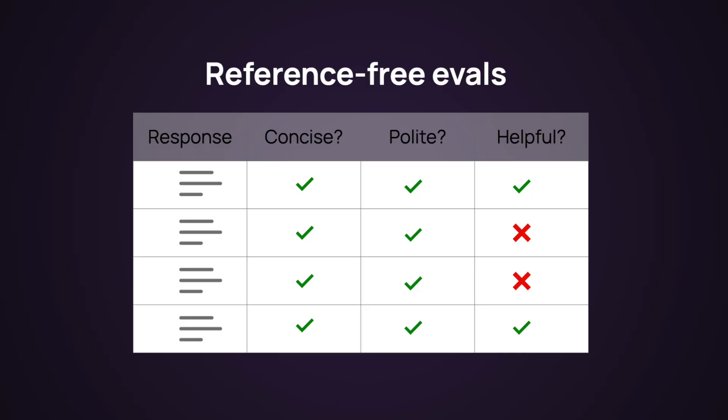The second way to run evaluations is open-ended or reference-free evaluations — that's where you don't have a correct answer in advance. For example, this applies to monitoring in production or to very complex open-ended or conversational scenarios where it's difficult to come up with an ideal response. In this case, you might be measuring specific qualities of the outputs you get — for example, the safety, politeness, correctness, length, and so on.